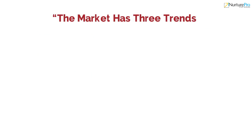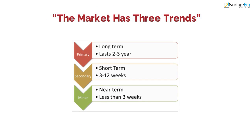The next tenet says the market has three trends. According to Dow, a trend has three parts: primary, secondary, and the minor. A primary trend can be an uptrend or a downtrend.